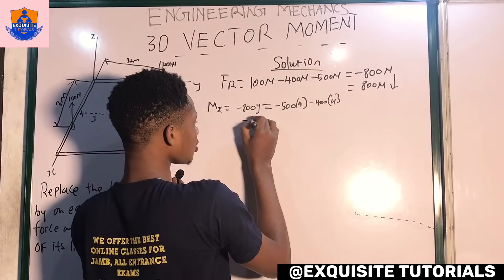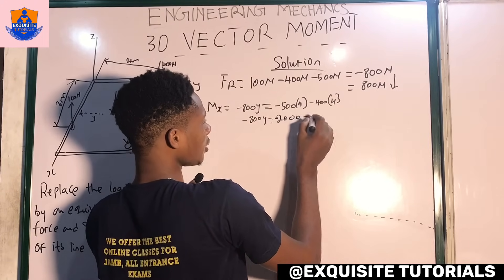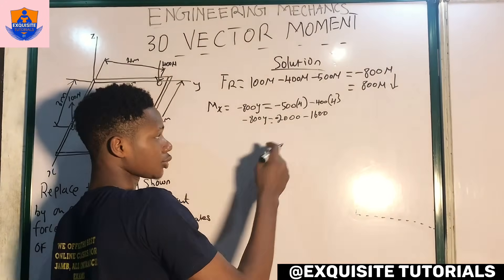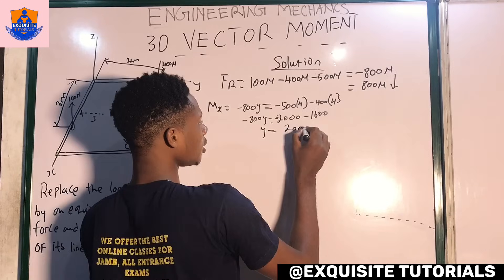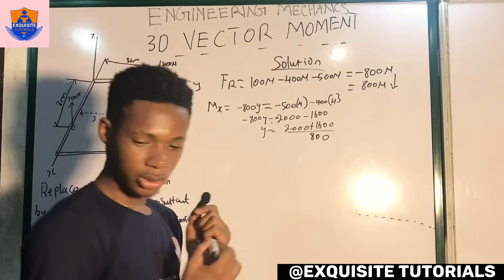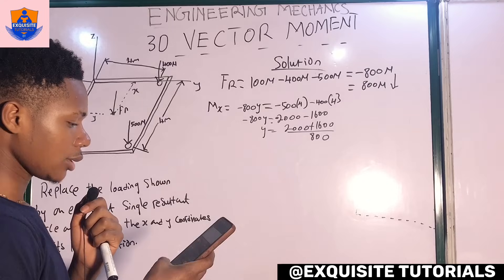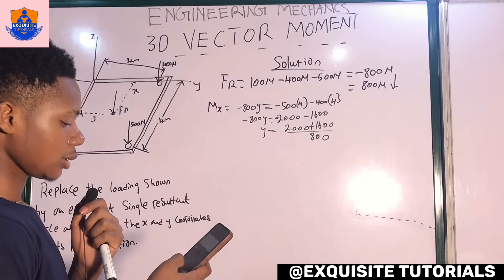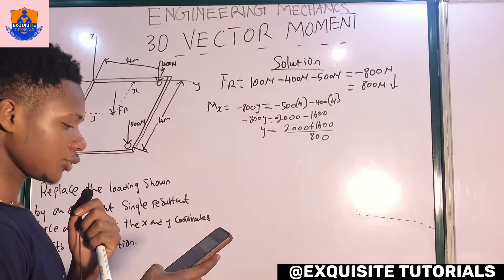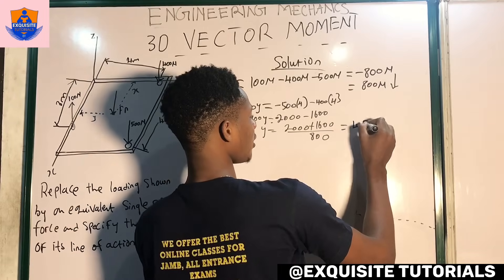Simplifying: minus 800y equals minus 2000 minus 1600. The negatives cancel, giving y equals (2000 plus 1600) divided by 800. Using a calculator: 2000 plus 1600 divided by 800 gives y equals 4.5 meters.